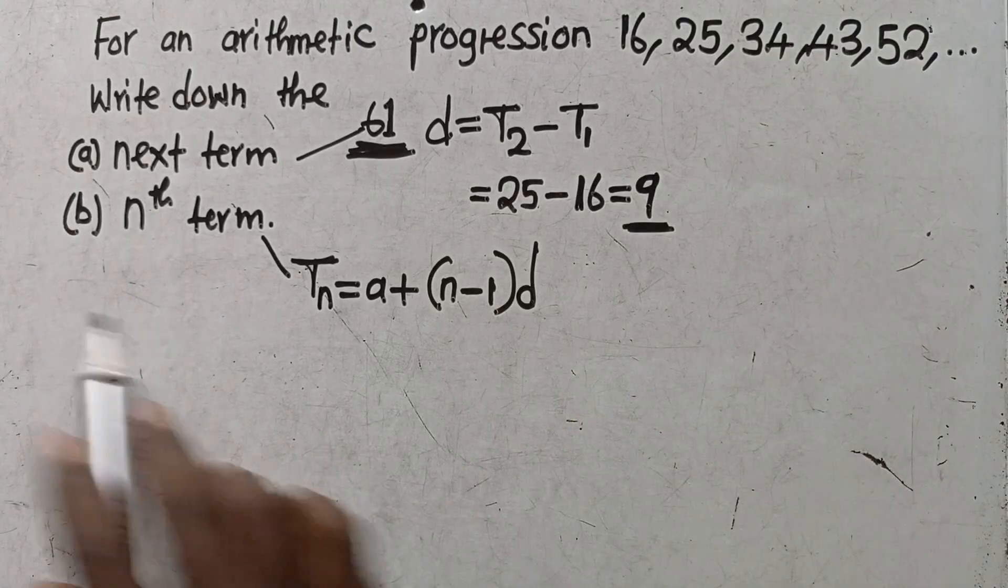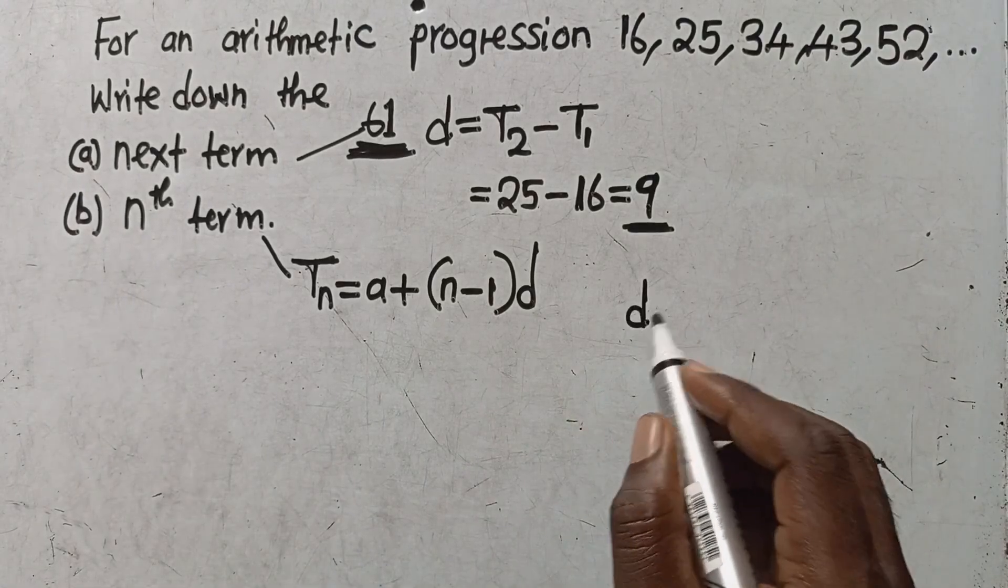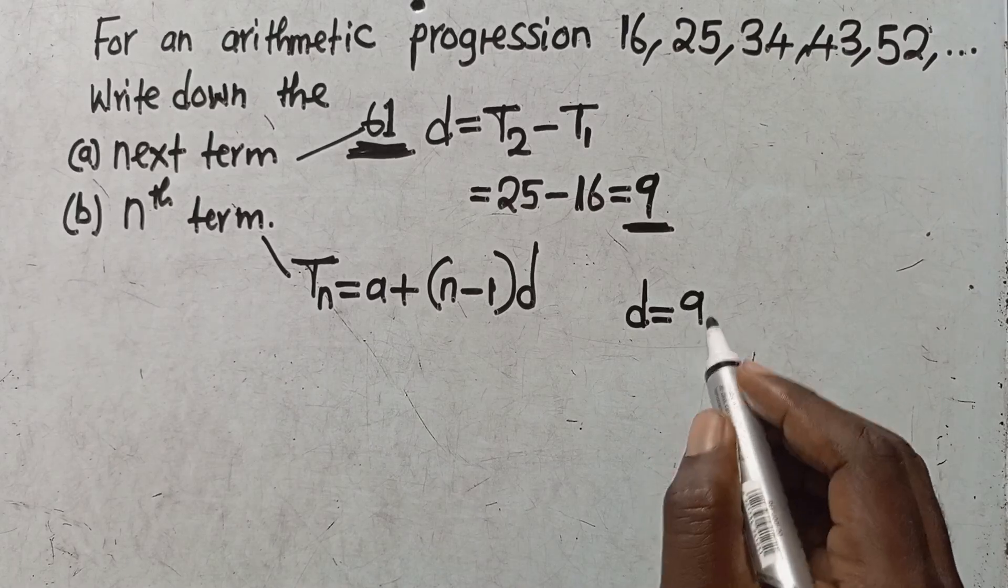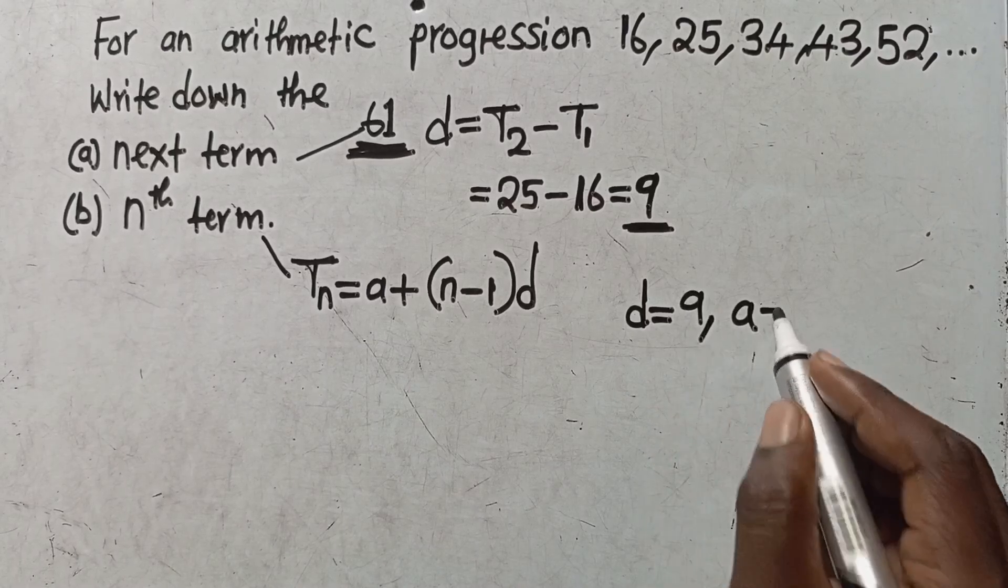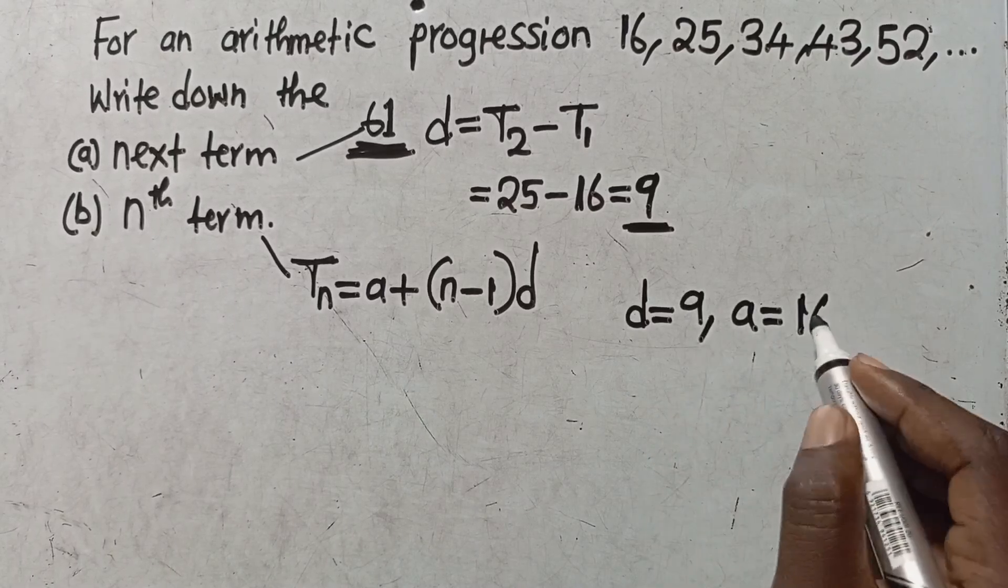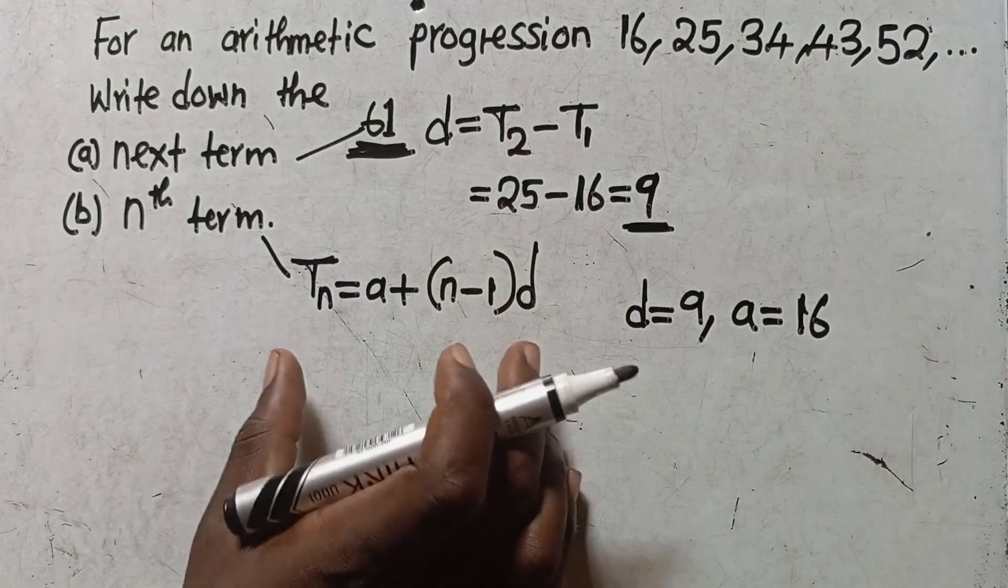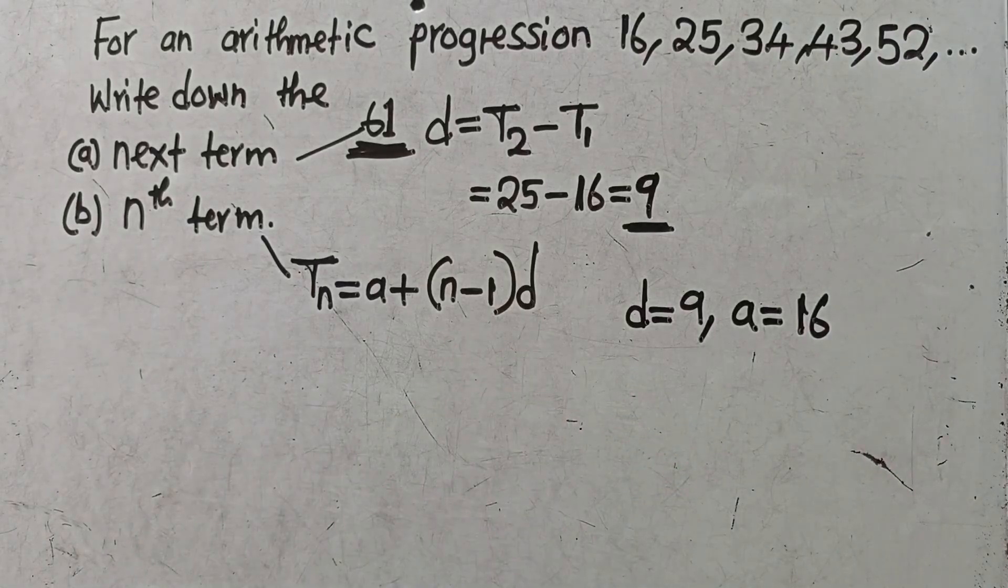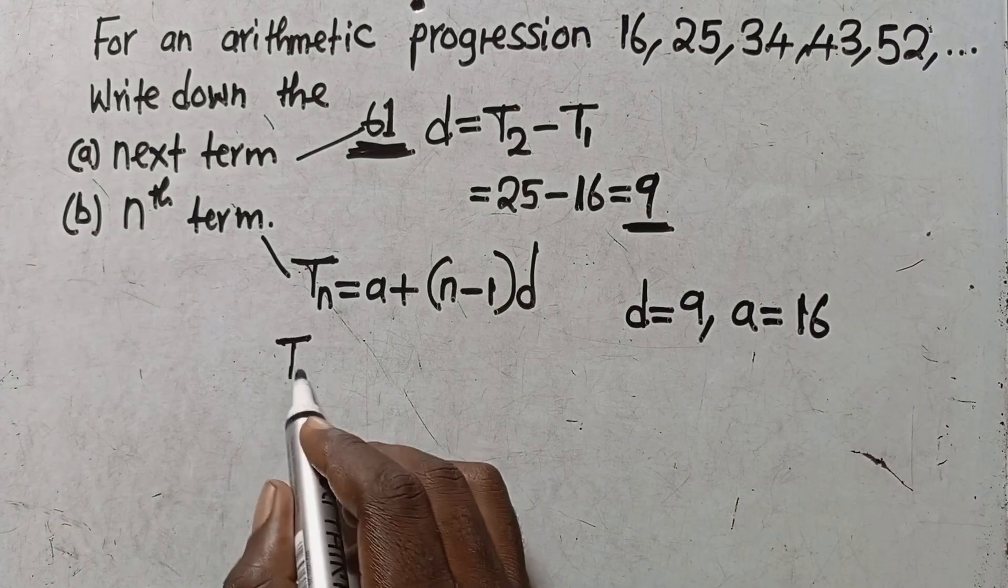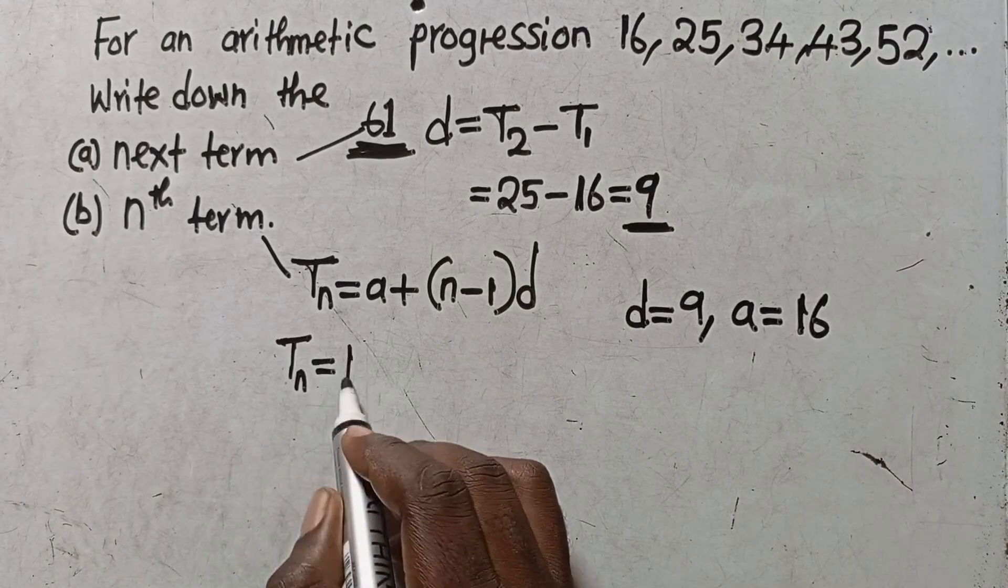Finding the nth term, you just need to know the common difference, which is 9, and the first term, which is 16. You substitute in the formula: Tₙ equals first term, 16, plus (n - 1) times common difference, 9.